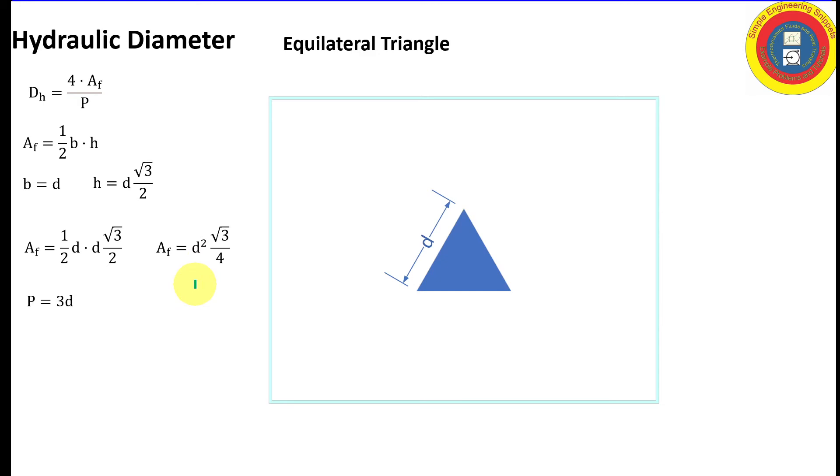The wetted perimeter is 3 times d. Plugging that into our equation for hydraulic diameter and simplifying, we get that the hydraulic diameter is equal to d over the square root of 3.